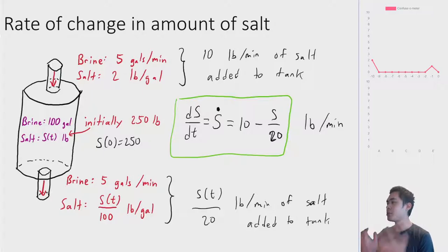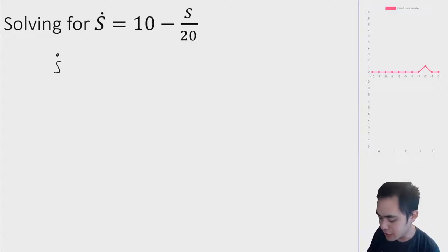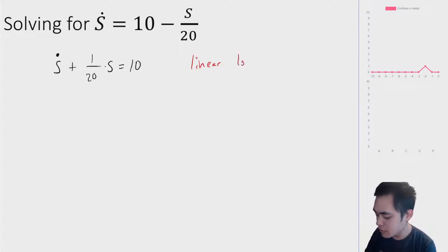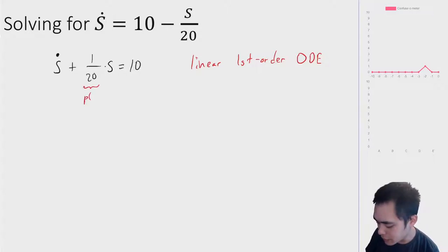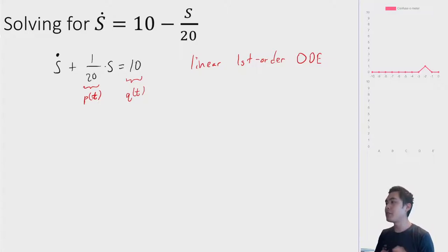We've turned this word problem into a differential equation, and this is a first order linear differential equation — so we know how to solve it. Let's rewrite it in canonical form: S-dot plus 1 over 20 times S equals 10. This is a linear first order ODE where P(T) equals 1/20 and Q(T) equals 10. Be careful — we're using the variable T instead of X, because for applied problems we care about time.